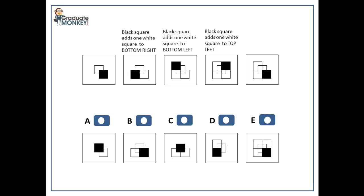There is an easier way to visualize the connection between these patterns. Imagine the black square is a window cleaning wipe and you are moving it in a clockwise direction to clean the window. Each white square left behind represents the cleaned area.